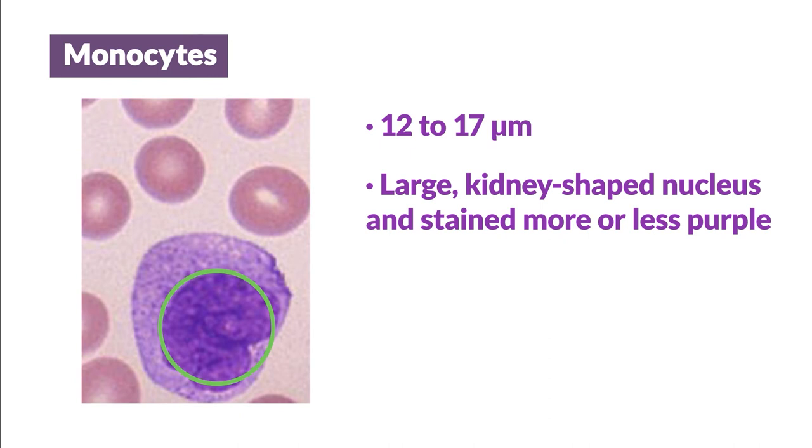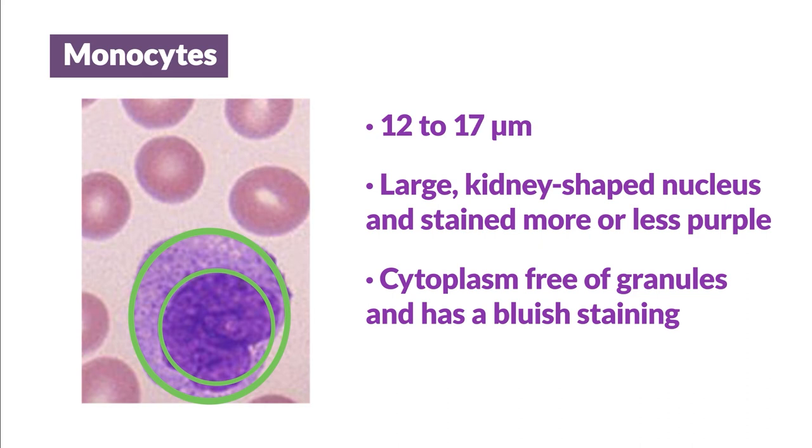In this case, the nucleus is surrounded by large amounts of cytoplasm, which is also free of granules and has a bluish staining. In the normal leukocyte formula, the proportion ranges between 2 and 8%.